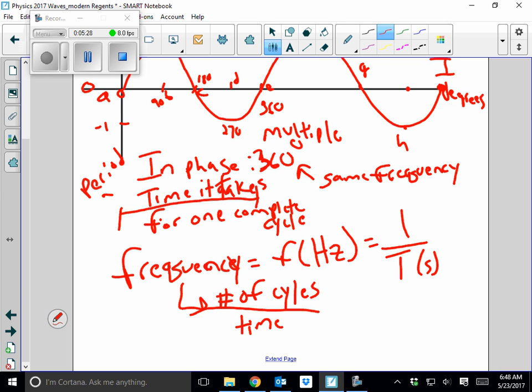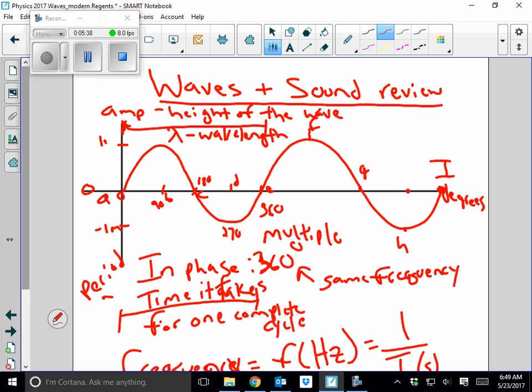Your wavelength is the length of one complete wave. Your amplitude is how high the wave is. Remember that's also measured in meters and period's measured in time.